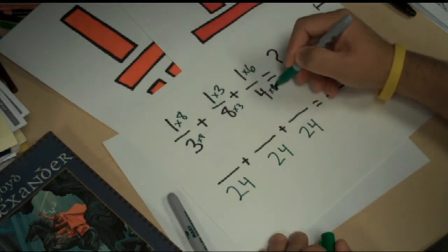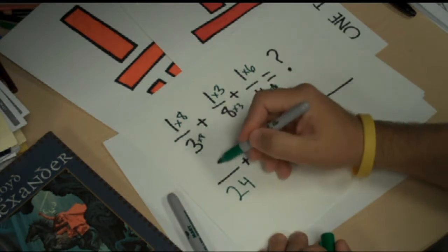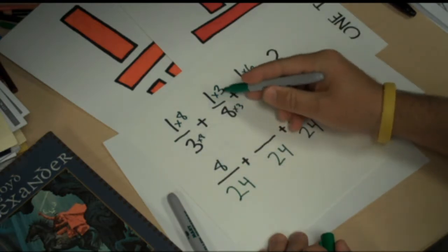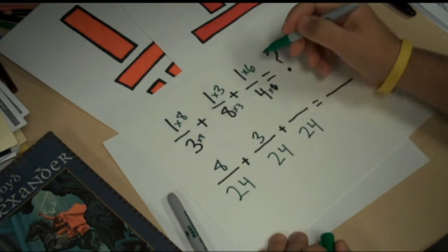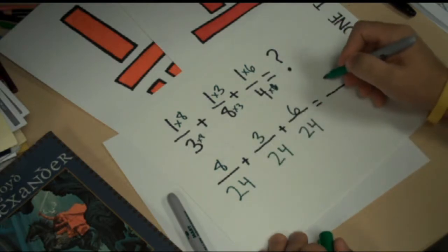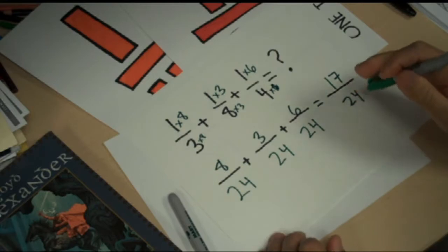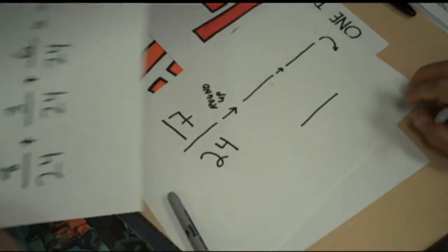Oops. 6. So, that leaves me with 8. 1 times 3 is 3. And 1 times 6 is 6. If I add this up, I get 17 24ths. So, that's how much of the book that I've read. I've read 17 24ths of the book.